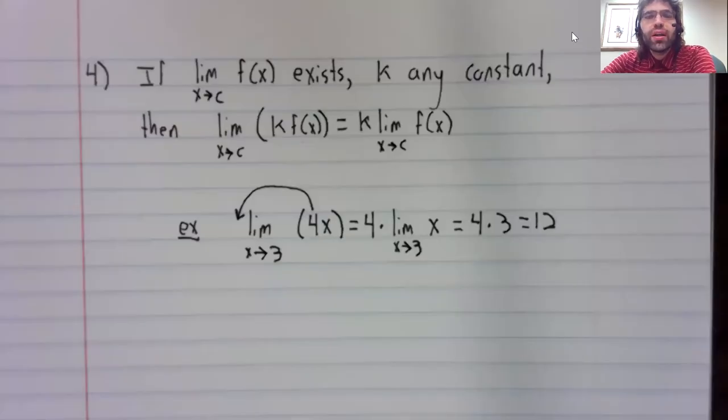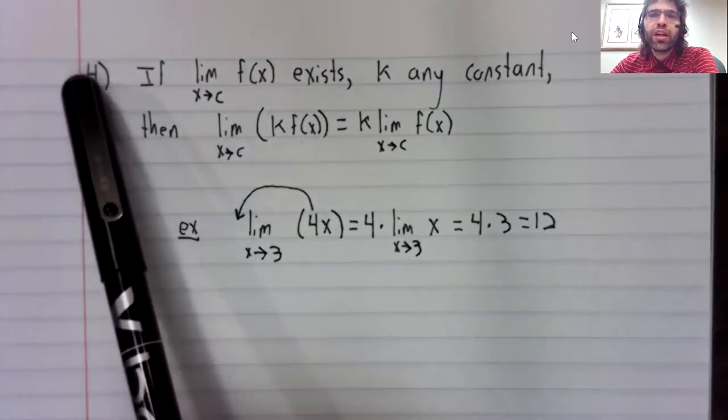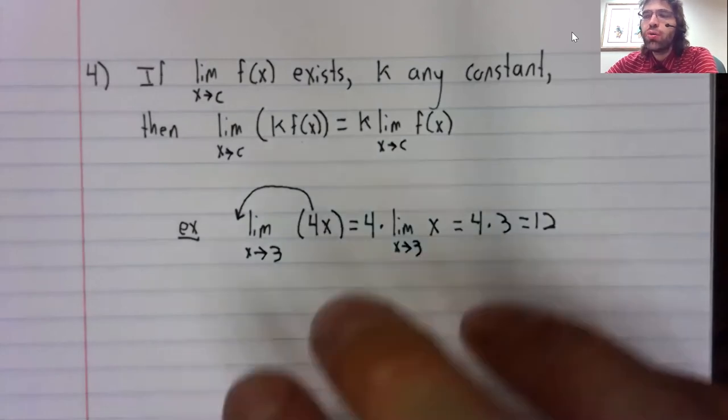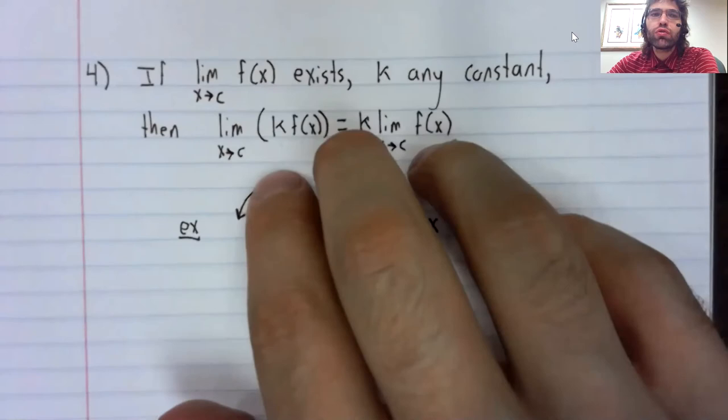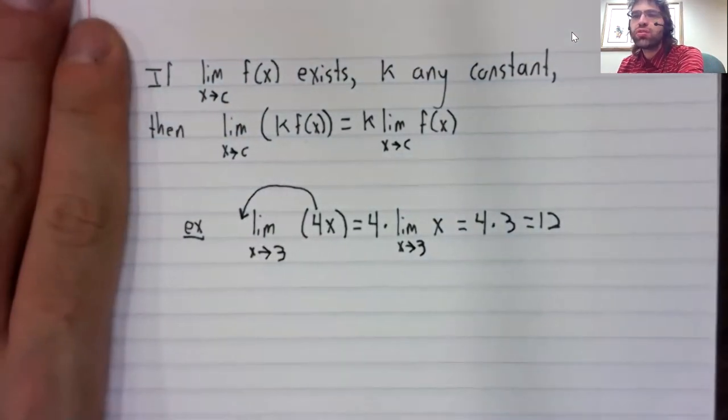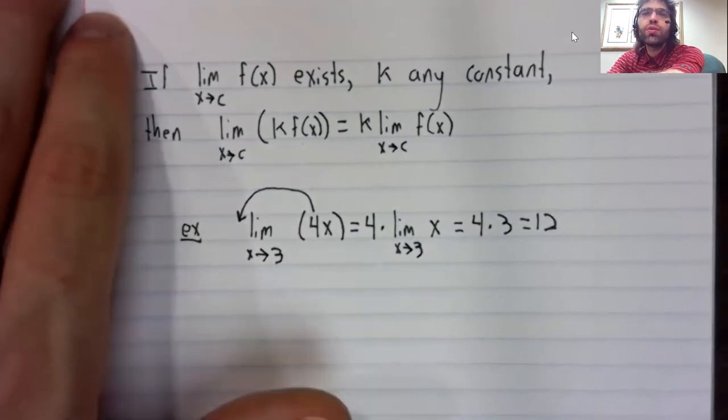Incidentally, as far as what you need to know, you need to know all of these rules. You shouldn't be committing this numbering to memory. Like you don't need to know that I've called this rule four. You just need to know this rule and be able to use it.